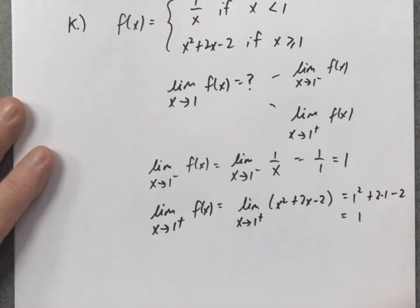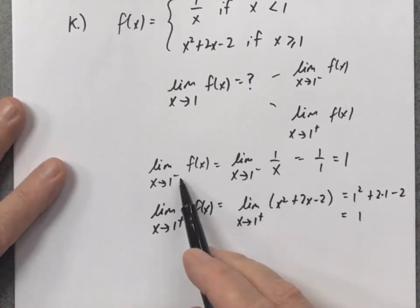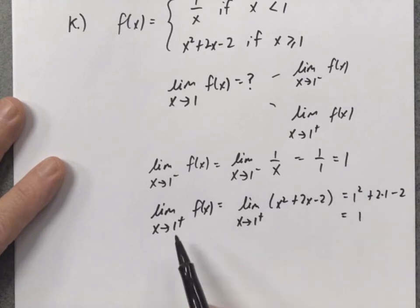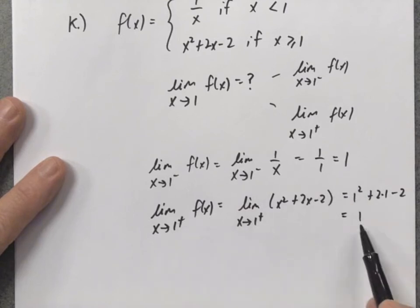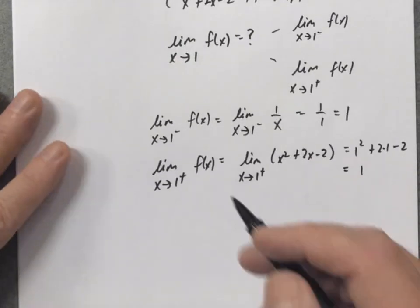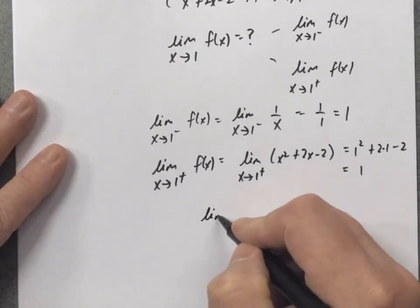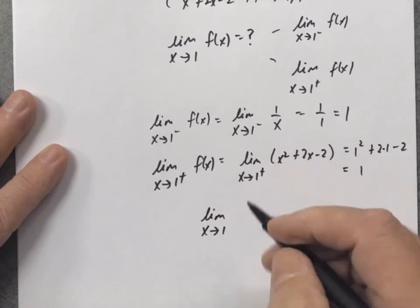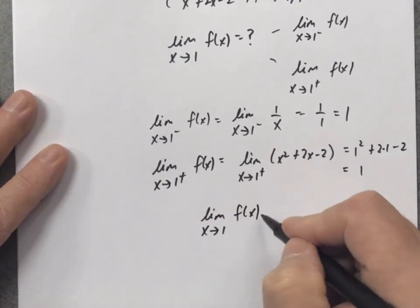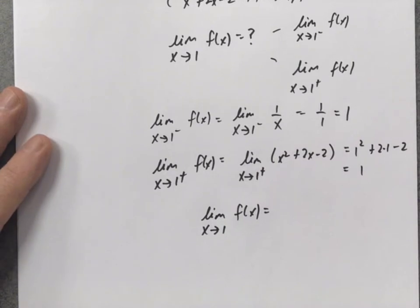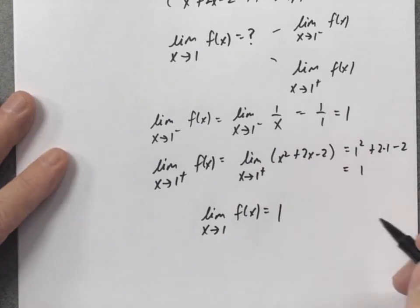Now I compare: from the low side the limit is 1, and from the high side the limit is 1. Since the low and high side limits equal the same thing, the overall limit as x approaches 1 of this function is 1.